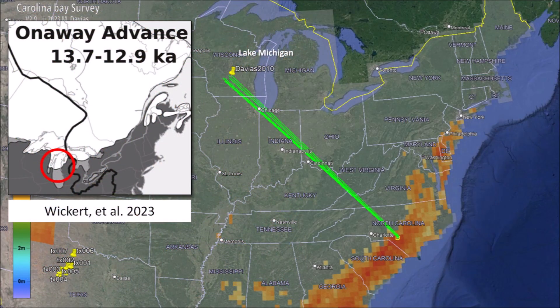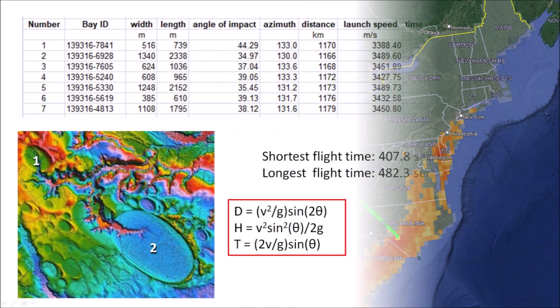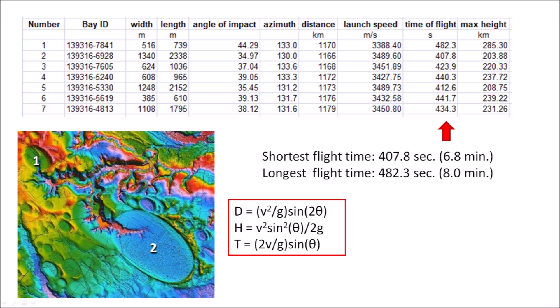Extending the azimuths of these seven Carolina Bays, we find that their origin is at approximately the convergence point reported by Davias and Gilbride at a GSA meeting in 2010. Taking into consideration the Coriolis effect due to the eastward rotation of the Earth, the source of the ice projectiles was probably in Lake Michigan, which was covered with ice during the Onaway advance 12,900 years ago. From the ballistic equations for these seven cases, the shortest flight time of 6.8 minutes was for bay number 2 and the longest flight time of 8 minutes was for bay number 1 — these bays were made 74.5 seconds apart. Bay number 2 is overlapping a highly eroded bay to its northwest, so it was not the first bay to form in this area.